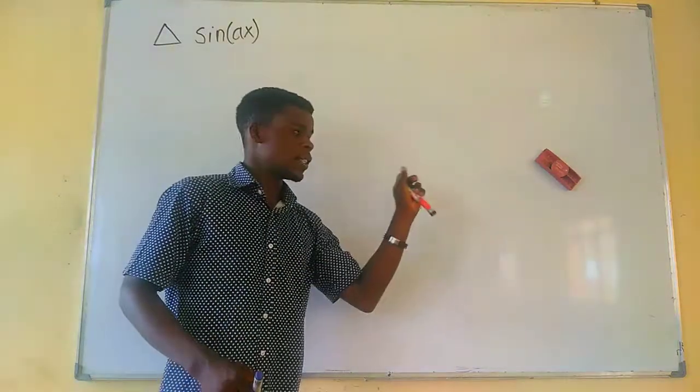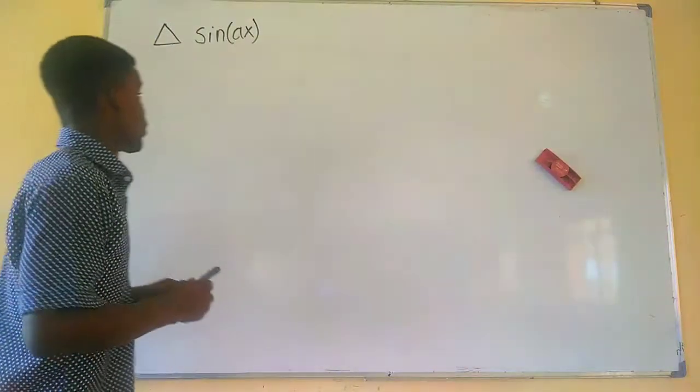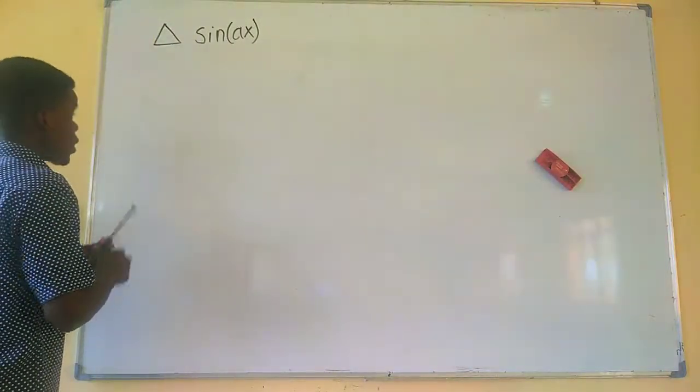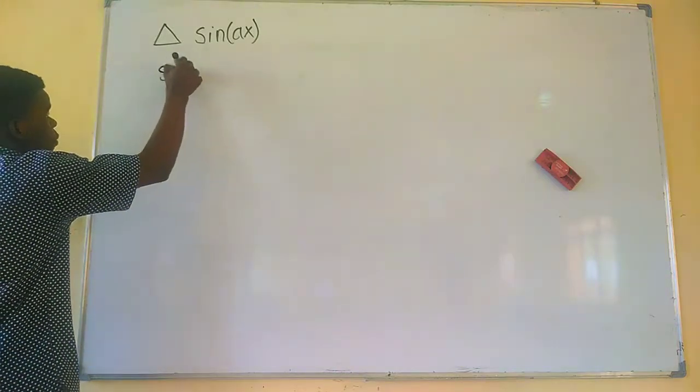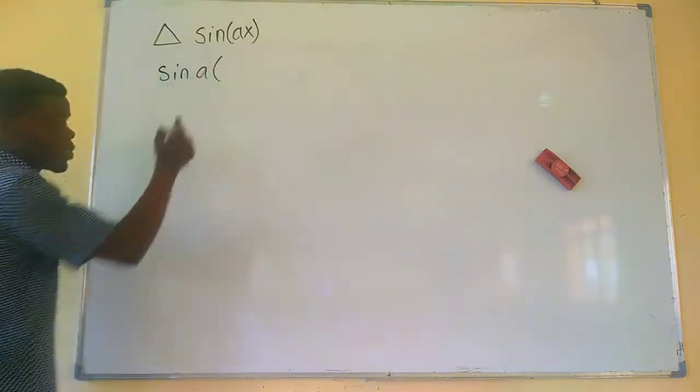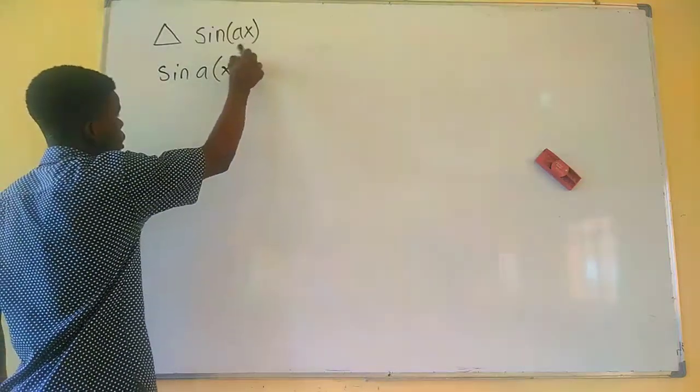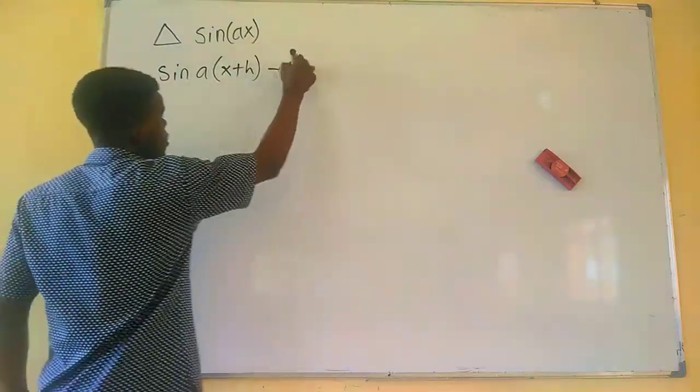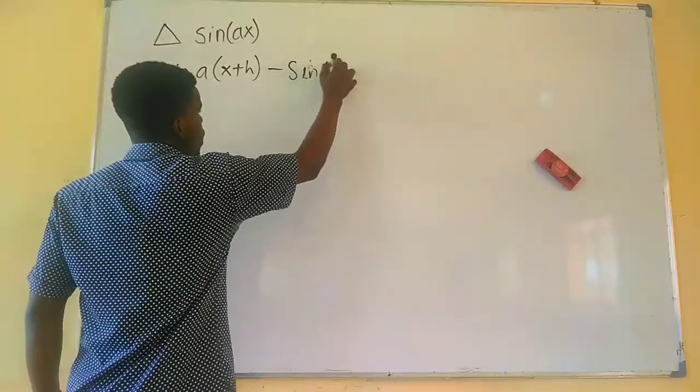All we need to do is to go forward, take the function forward and subtract the one behind from it. So we are just going to have the forward difference of sine ax to just be sine of a, then in place of x we are going to add h to that, we are going to have x plus h, then minus sine of the original function x.